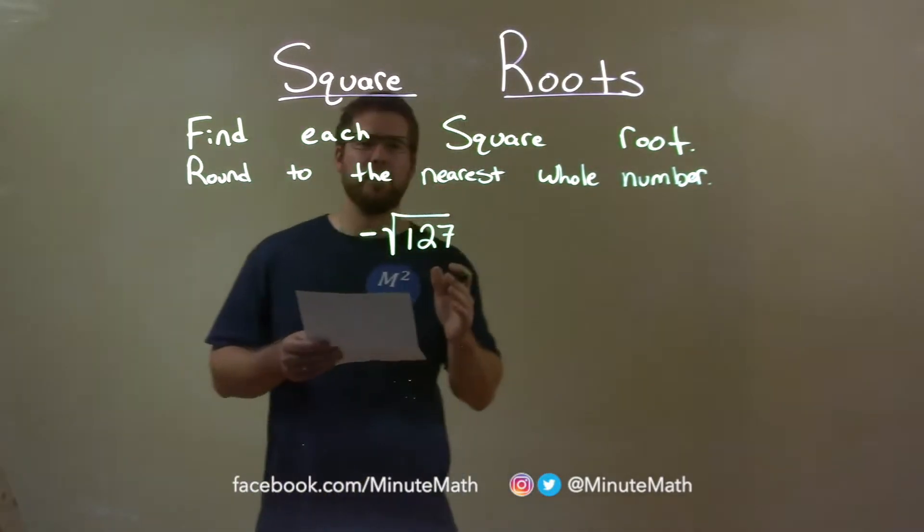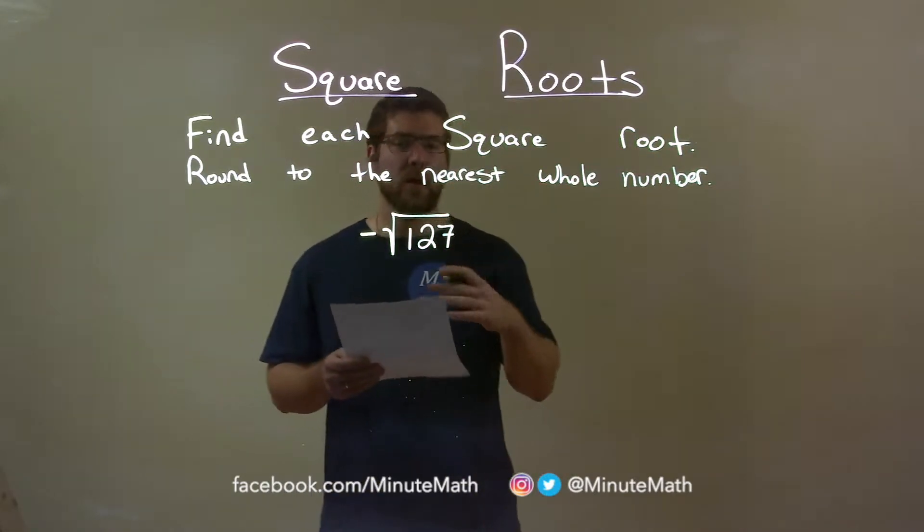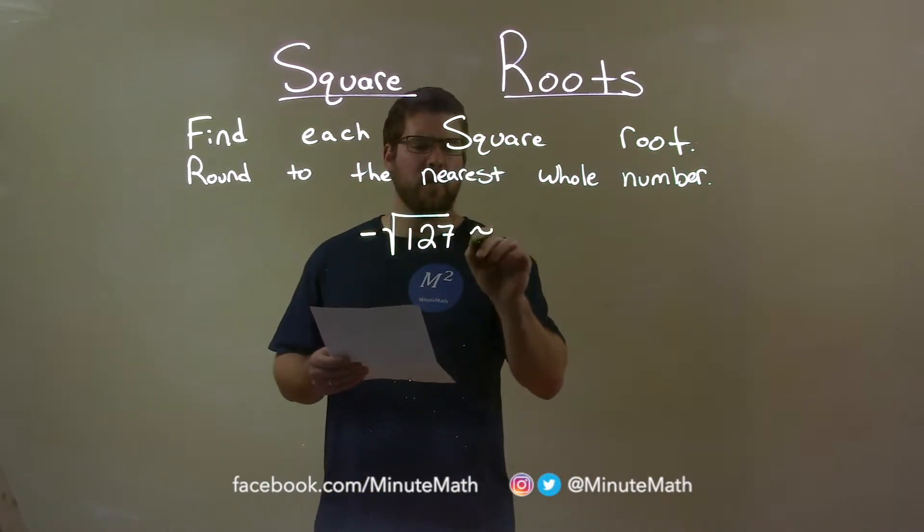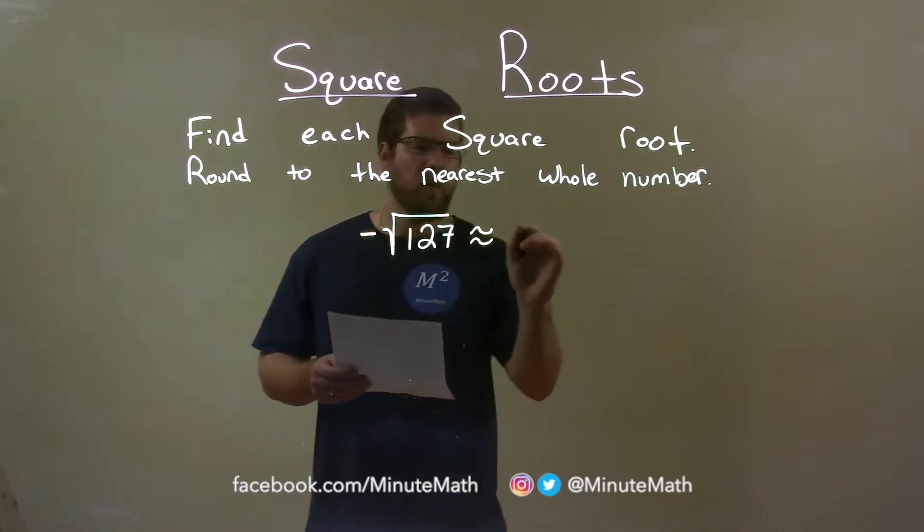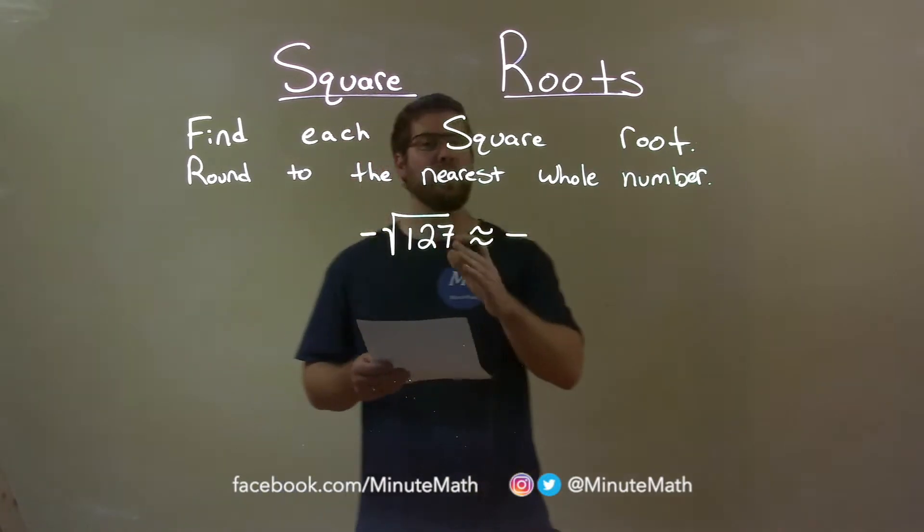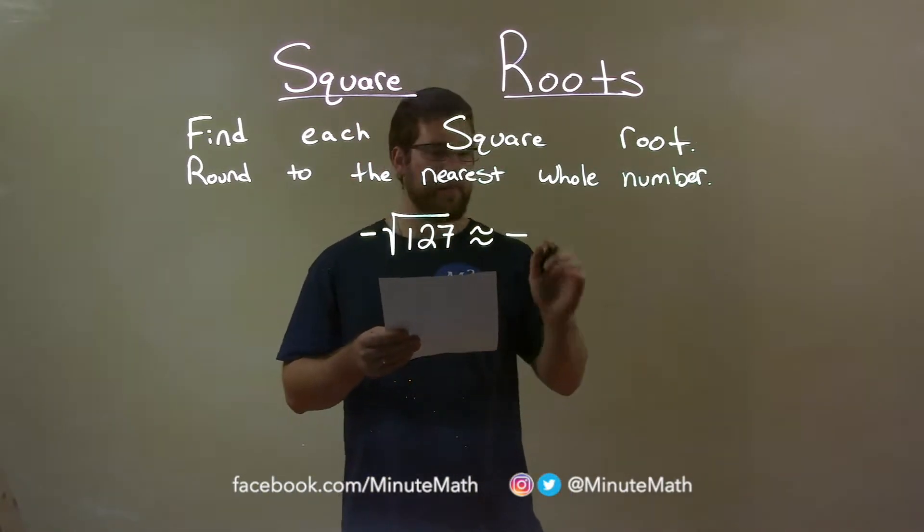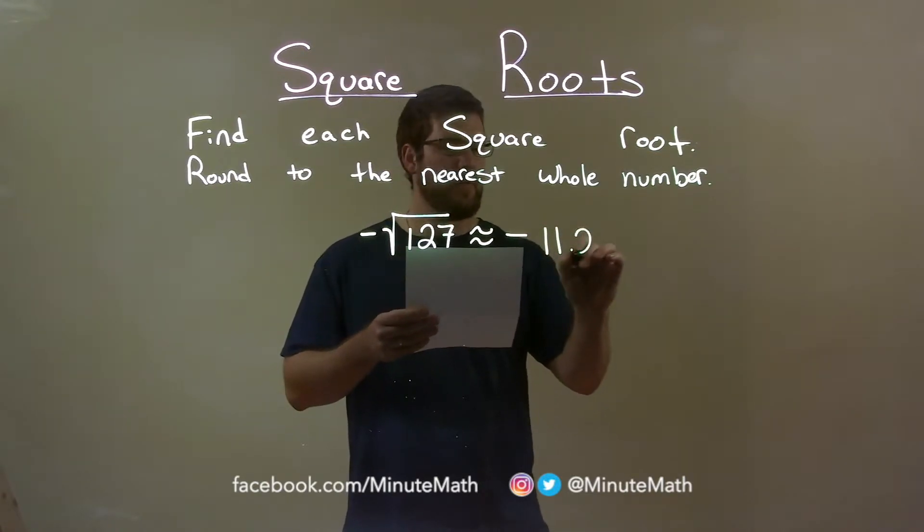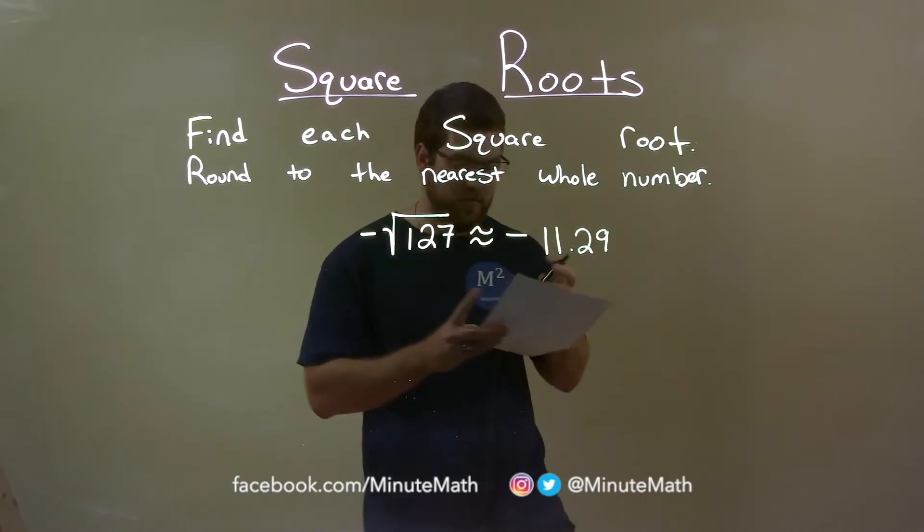We know when we plug in square root of 127 in our calculator, we'll get a decimal. So this is going to be an approximation. We bring the negative over, and the square root of 127 in the calculator is approximately 11.269.